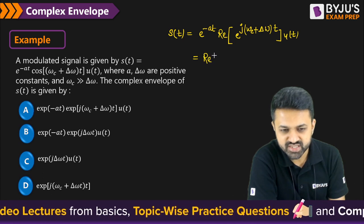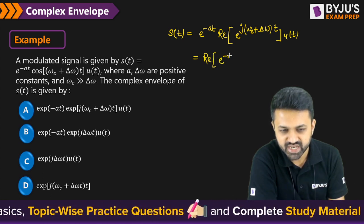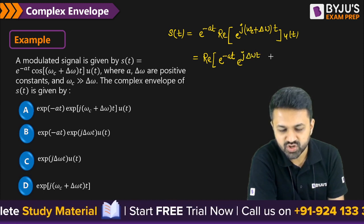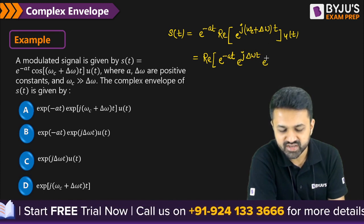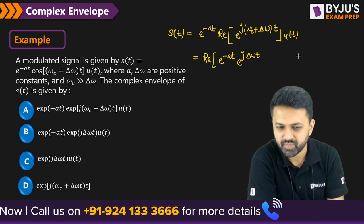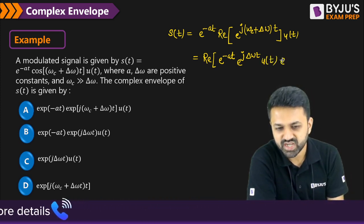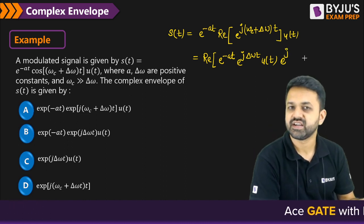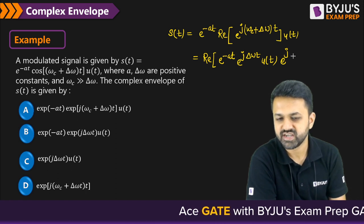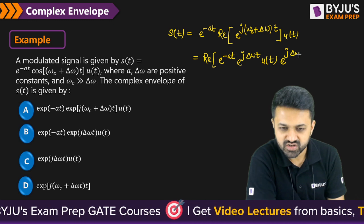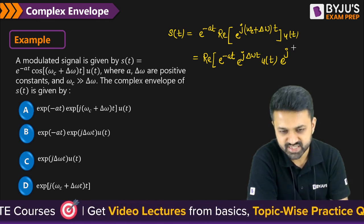So if you take this e^(-at) inside and you separate your carrier frequency, then it is j·Δω·t and you can write this u(t) also inside this real part because u(t) is a real signal only. So it is having the real part. Either you write it inside the real part or outside, it does not even matter. And then it is e^(jωc·t).